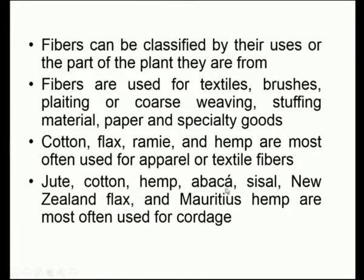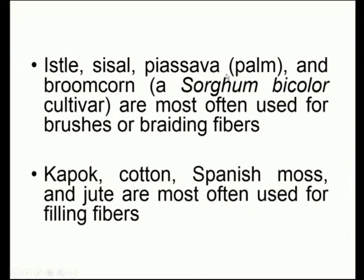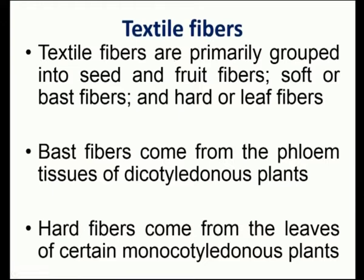Jute, cotton, hemp, abaca, sisal, New Zealand flax, and Mauritius hemp are most often used for cordage — a class of packing material. Isle, sisal, piassava, and broom corn are most often used for brushes or braiding fibers, which are relatively very hard in property. Kapok, cotton, Spanish moss, and jute are most often used for filling fibers.